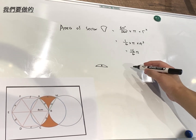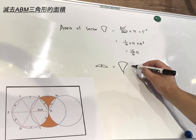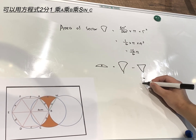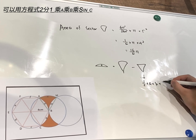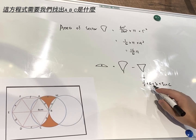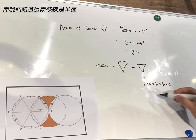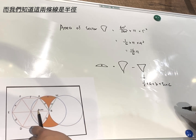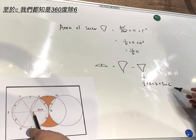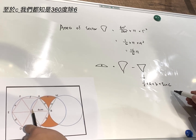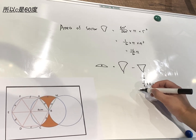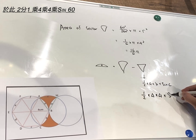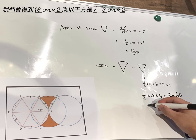Now to find the tiny sector area, we need to find the sector area minus the triangle area. For the triangle, we use the equation: half times a times b times sine C. Since this line and this line are both radii, a and b are both 4. And C is 360 divided by 6, so C equals 60 degrees. So we use half times 4 times 4 times sine 60.